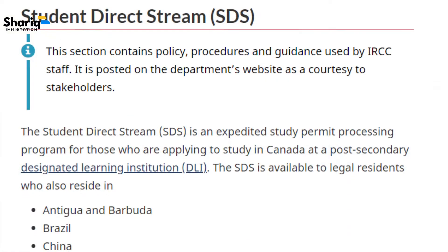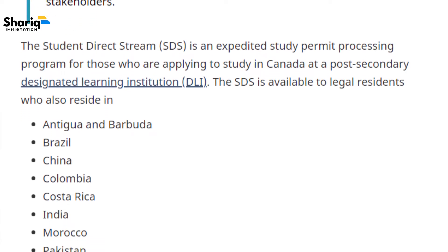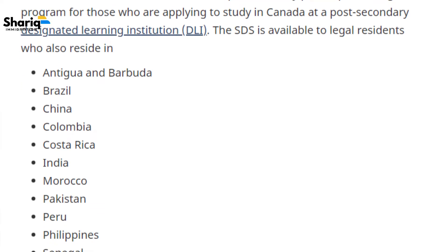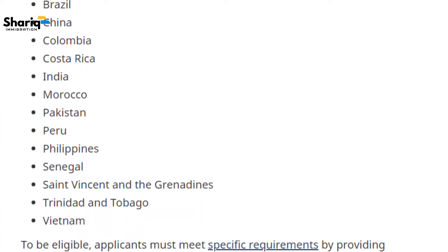The SDS student visa stream is only available for residents of specific countries: Antigua and Barbuda, Brazil, China, Colombia, Costa Rica, India, Morocco, Pakistan, Peru, Philippines, Senegal, St. Vincent, Trinidad and Tobago, and Vietnam. If you are residing in one of these approximately 12 to 13 countries, you are eligible to apply under SDS.